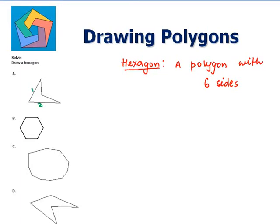1, 2, 3, 4. Not a hexagon. 1, 2, 3, 4, 5, 6. This has six sides, so this is a hexagon. Let us see other figures as well.